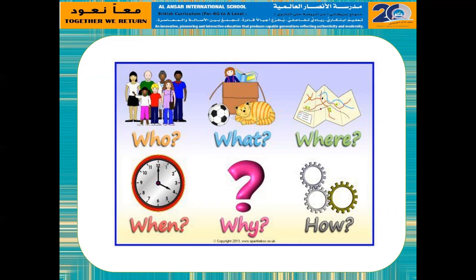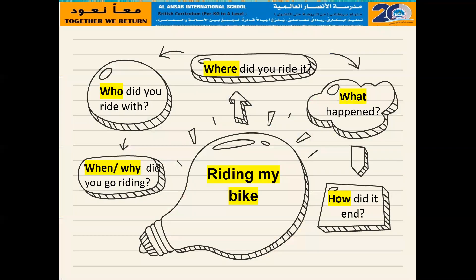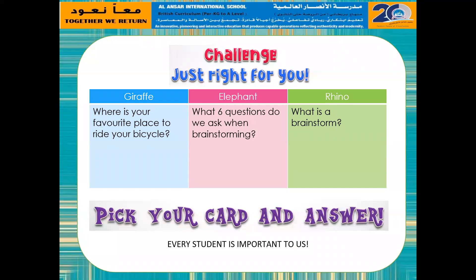do you remember the six questions that we have to ask? We have to ask who, what, where, when, why, and how. So let's do that. Once you've answered all of those questions in your brainstorm, you will have completed the first part of creative writing.